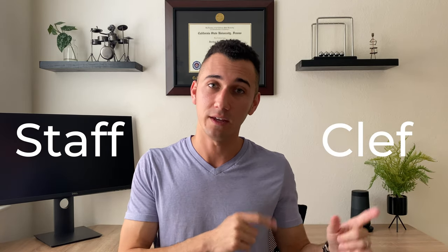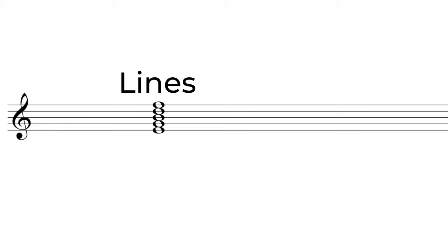And we don't know where our notes go on the staff until we know what our clef is. For this video, we're going to start off with the treble clef. Music notes can live on lines or in spaces, and when we have the treble clef on the staff, specific notes live on specific lines and spaces.